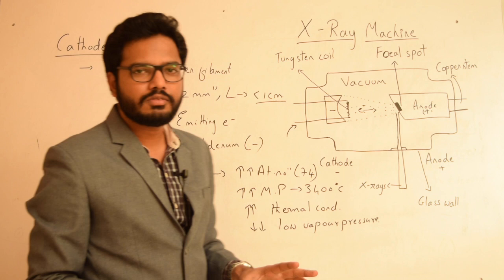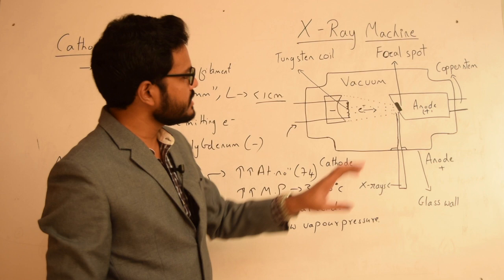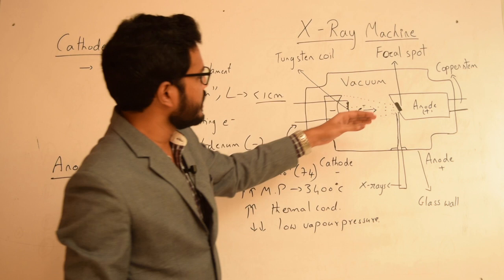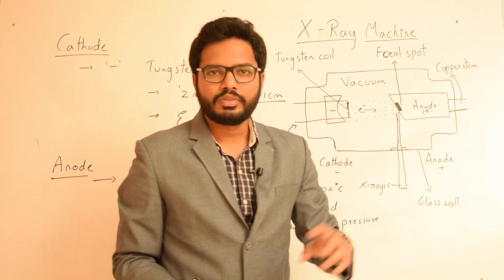The anode is attached to a copper stem, which is a very good conductor of heat. As a result, the heat produced at the anode area is efficiently dissipated, thereby preventing burnout of the machine.